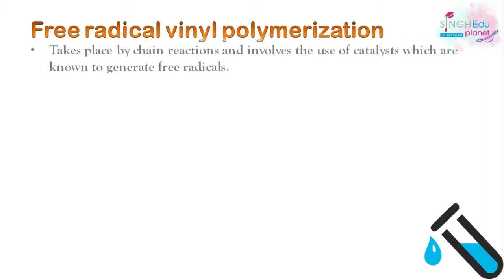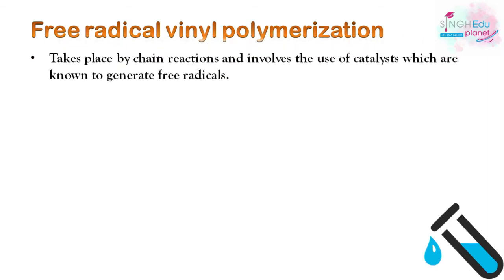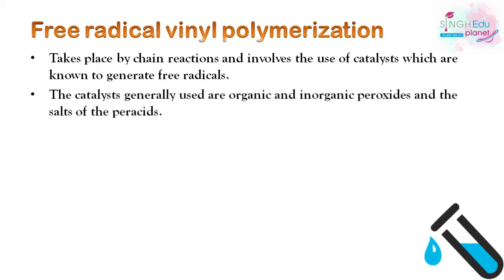Free radical polymerization takes place by chain reactions and involves the use of catalysts that generate free radicals. The catalysts generally used are organic and inorganic peroxides, and salts of peroxides can also be used.